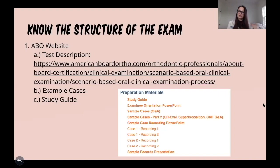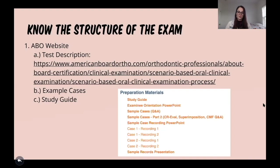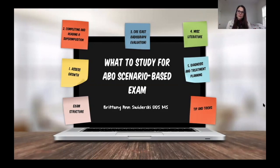The study guide breaks things down into domains — the domains the ABO wants you to know to show proficiency and pass the exam. There are about 40 questions covering what can and will come up on the exam. There's no reason not to know these. If you can figure out how to apply them and get comfortable assessing them, you'll be able to pass.